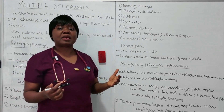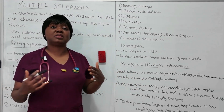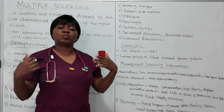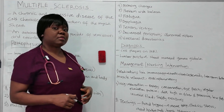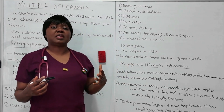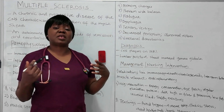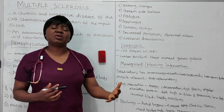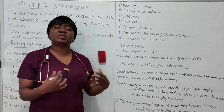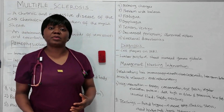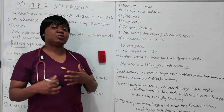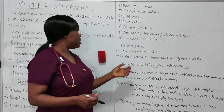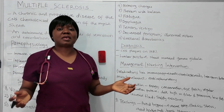Another symptom is problems with balance, what we call ataxia, where they find it difficult to coordinate their movements. They also experience fatigue, getting easily tired, and dysphagia — difficulty swallowing. They could experience tremors and vertigo, where they feel like the room or themselves are spinning. There is also decreased perception, which is a safety issue because they may not be able to differentiate between temperature changes — hot or cold — and could get burned. They will experience hyperreflexia and emotional disturbances like anxiety and even depression.